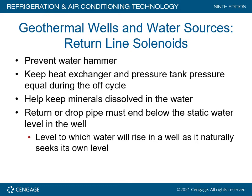Return line solenoids prevent water hammer and keep the heat exchanger and pressure tank at equal pressure during the off cycle. They also help keep minerals dissolved in the water — we don't want minerals settling out and collecting on metal piping, which creates a heat transfer barrier. The return or drop pipe must end below the static water level in the well to ensure positive water flow and avoid air binding.